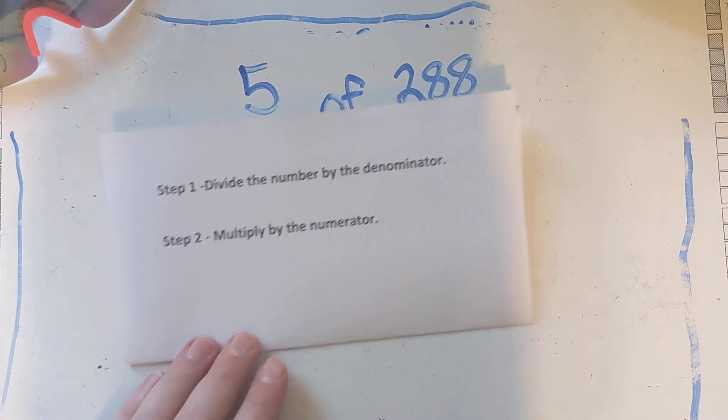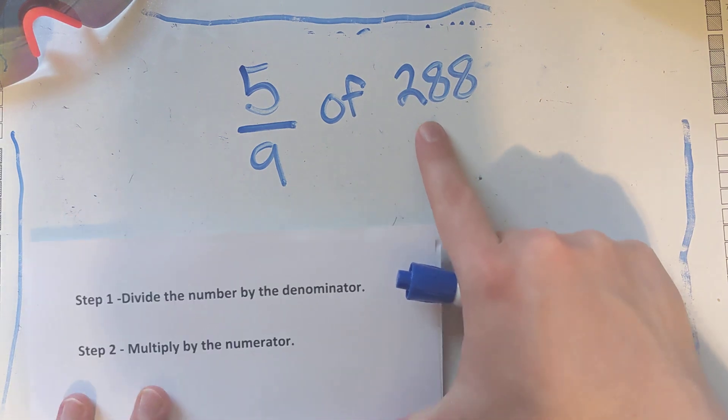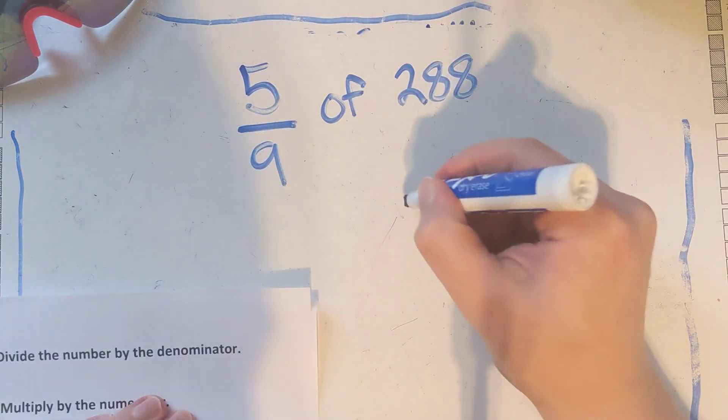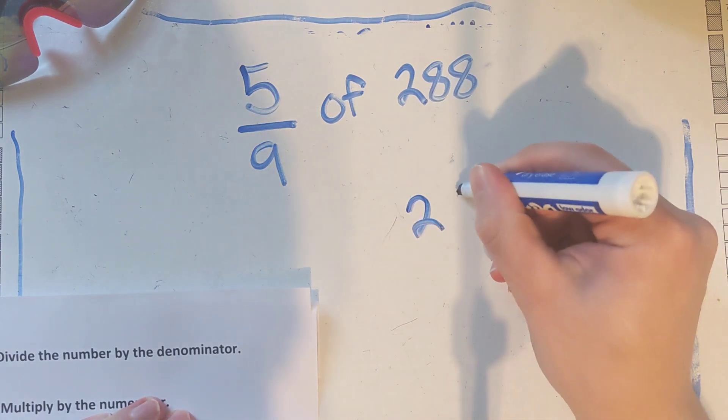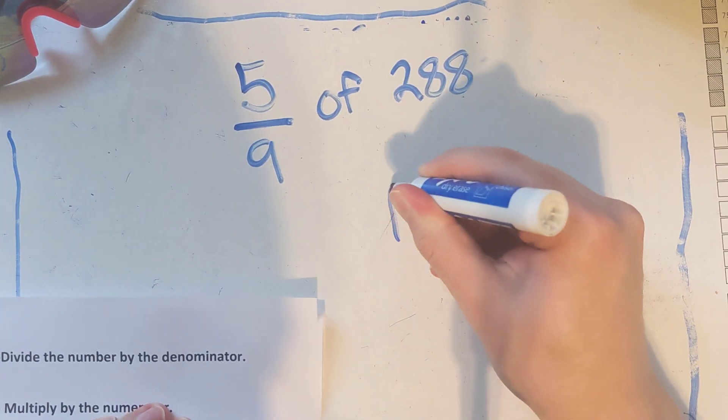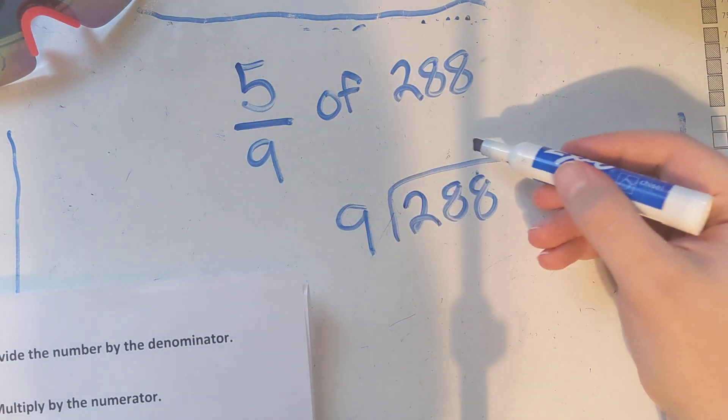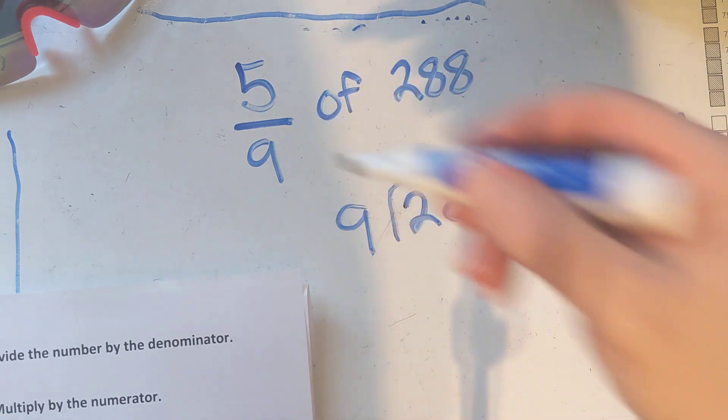So we're gonna divide 288 by 9. So we got 288 divided by 9, and whatever our answer is that we're going to get, we're going to multiply it by 5.